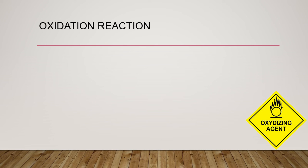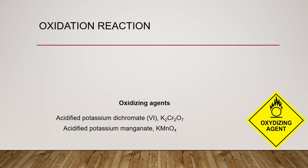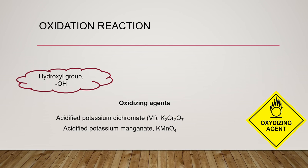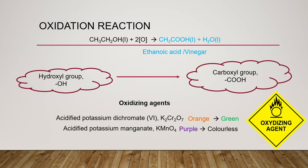Apart from combustion, other oxidation reactions of ethanol require oxidizing agents. In the laboratory, acidified potassium dichromate and acidified potassium manganate are used as oxidizing agents. The alcohol's hydroxyl groups are easily oxidized to become carboxylic acid, which has the carboxyl group. Ethanol is oxidized into ethanoic acid, also known as vinegar. When acidified potassium dichromate is added to ethanol and heated, it turns from orange to green. Heating ethanol with acidified potassium manganate changes the solution from purple to colorless.